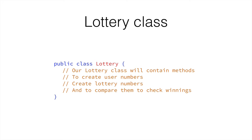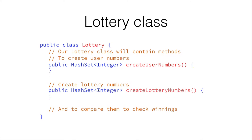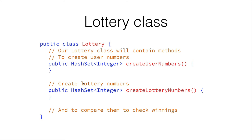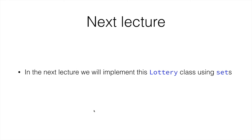So something like this — this is our lottery class and we have our createUserNumbers method that will create a HashSet and return it. We'll have a different method to create the lottery numbers and return a HashSet. And then we'll have a method to compare the 2 sets that we create and check the winnings. The userWinnings method will call these 2 methods, get the user set and the lottery set returned, and compare them inside this method. So in the next video we will implement this lottery using sets.